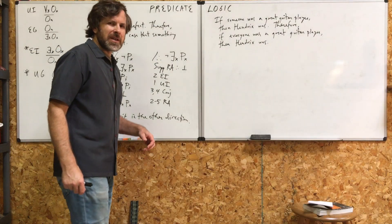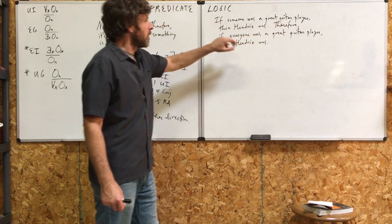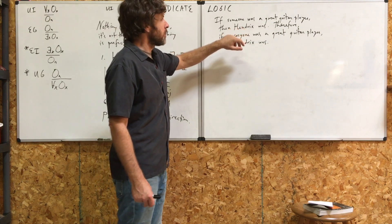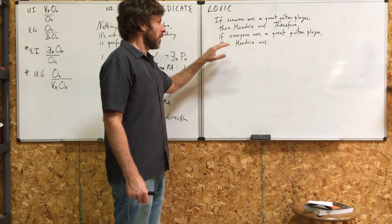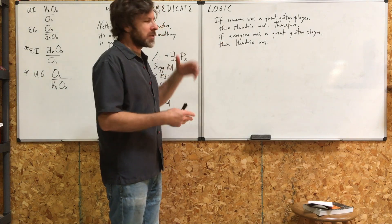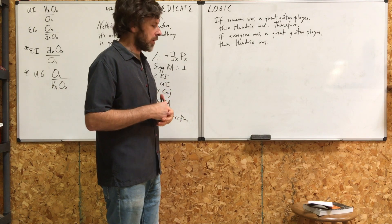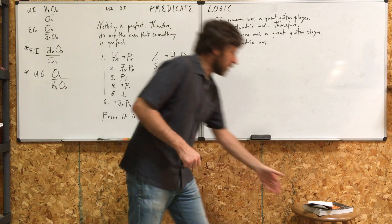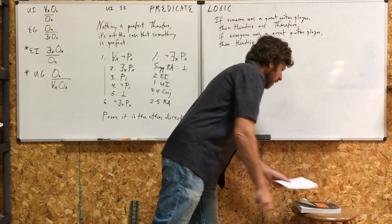Let's look at a second argument. If someone was a great guitar player, then Hendrix was. Therefore, if everyone was a great guitar player, then Hendrix was. This is an interesting example that's talked about in the book at some depth. I think it's good to go through it here. Remember the book? This one right here.